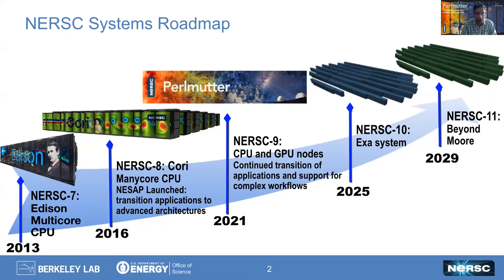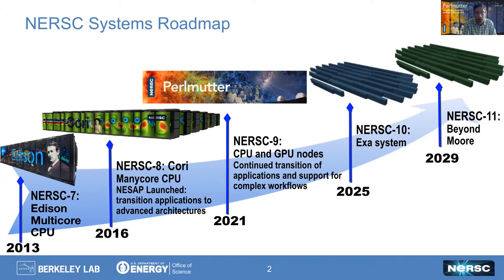In the NERSC sort of pantheon of systems, Perlmutter is right there in the middle. Starting in 2021, we started deploying parts of Perlmutter, and we made the GPU accelerated nodes the very first things available to our staff, then some early users, then all users. We have a new system every few years, and Perlmutter is in some ways new and in some ways a continuation of what we initiated with Cori, where there were many-core CPUs and the sort of parallelism and advanced architectures that kicked off that era.